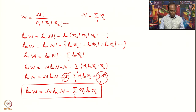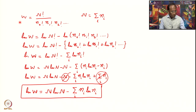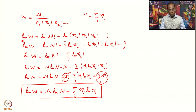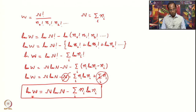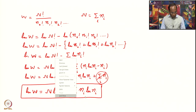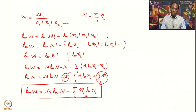So what have we done? Instead of W, we decided to work on log W. The reason for working on log W is that it allows us to arrive at an expression which can easily be transformed into the desired result. What we now have is: log W = N log N − Σ ni log ni.